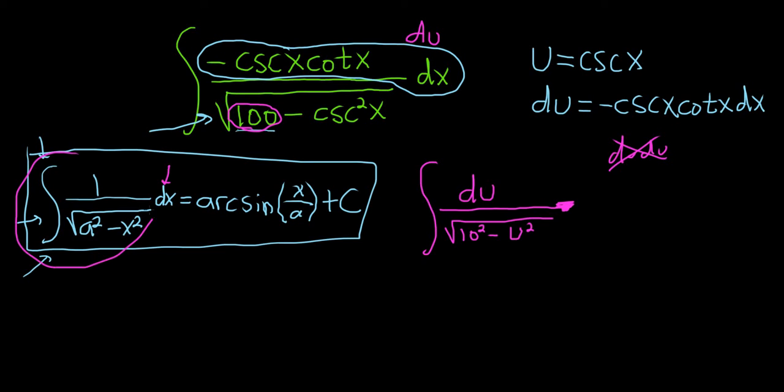Now we can just directly apply the formula. So this will simply be the arcsine of u over a. Instead of x, it's u. So u over 10 plus c. And that's equal to the arcsine.